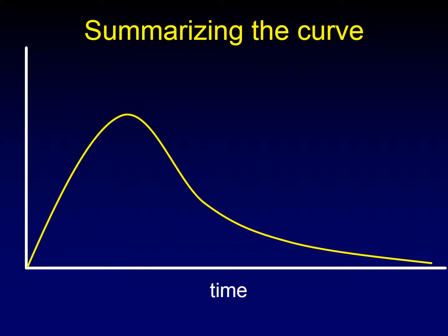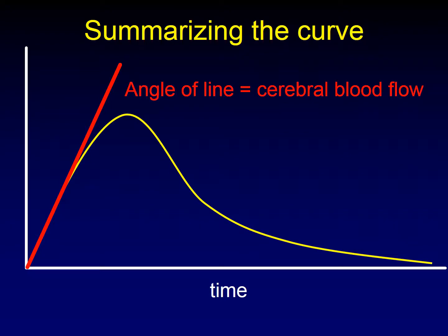The next parameter we're going to analyze is cerebral blood flow. We're going to take the upslope of this curve and extend it as a straight line — finding the maximum angle we can find on the curve — and we're going to measure the angle of that line. The angle of that line is what we're calling cerebral blood flow.